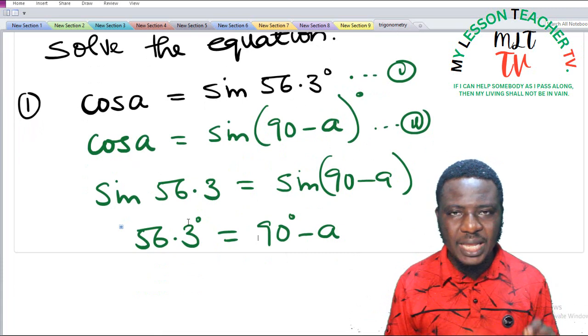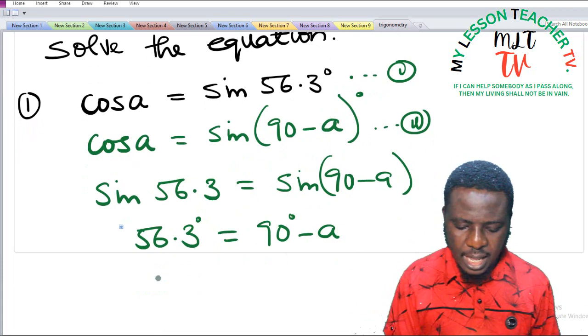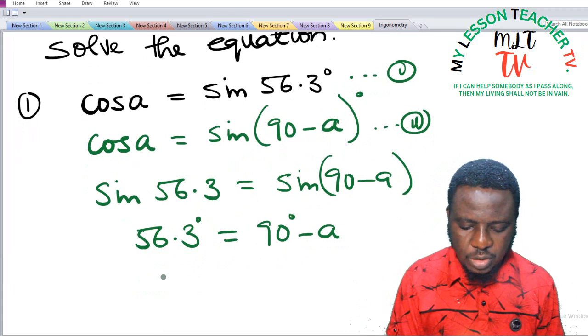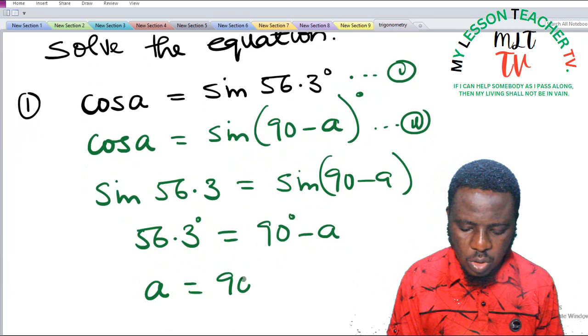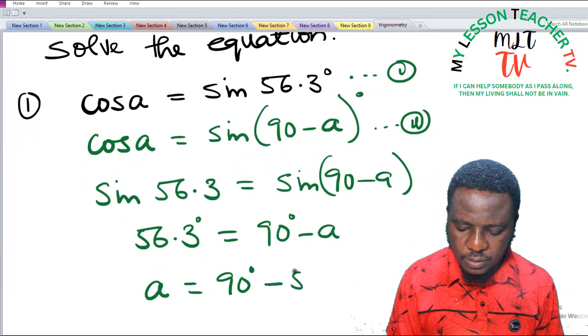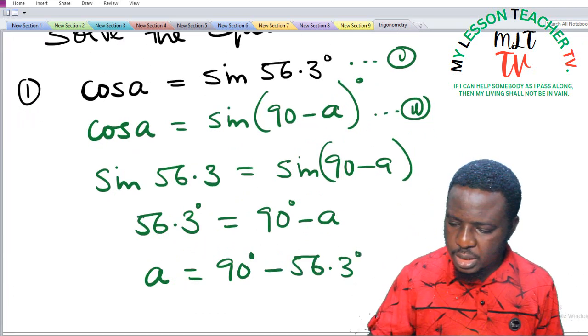So for us to get our value for A, we are going to make A the subject of the formula. This gives us, if you take minus A to the other side of the equation, you now have A to be equal to 90 minus 56.3 degrees.